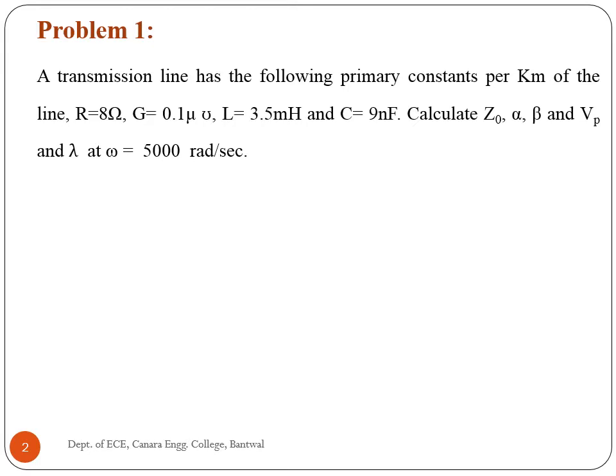First problem: a transmission line has the following primary constants per kilometer — R equal to 8 ohm, G equal to 0.1 micro mho, L equal to 3.5 milli henry, and C equal to 9 nanofarad. Calculate the characteristic impedance, attenuation constant, phase constant, phase velocity, and wavelength at omega equal to 5000 radians per second.